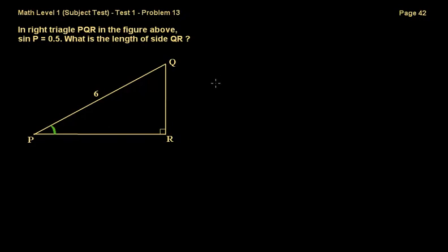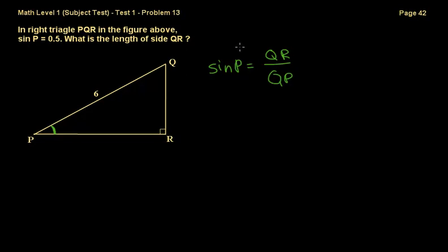What is the definition of sine? It's the side opposite to the angle over the hypotenuse. So sine P is equal to the side opposite to the angle, which is QR, over the hypotenuse, which is QP. Now we know what the hypotenuse is, and we know that sine P is 0.5. If we just substitute both of them into the equation, we can find QR.